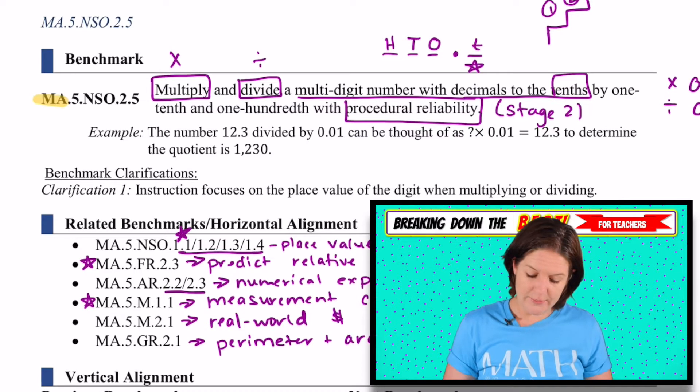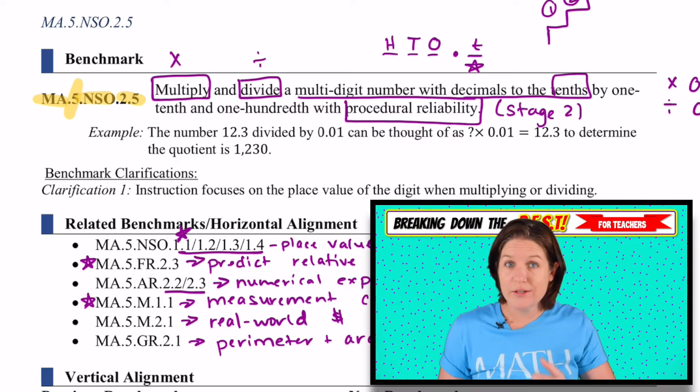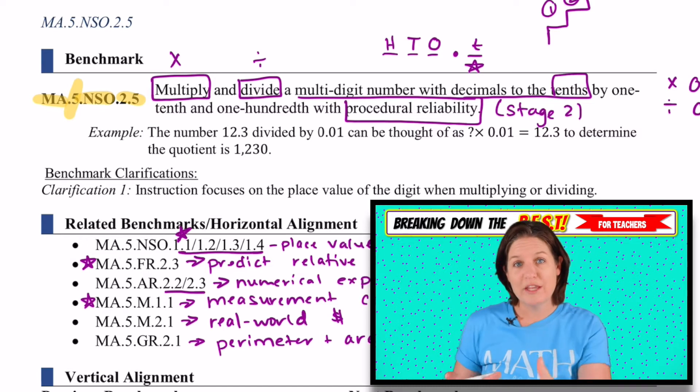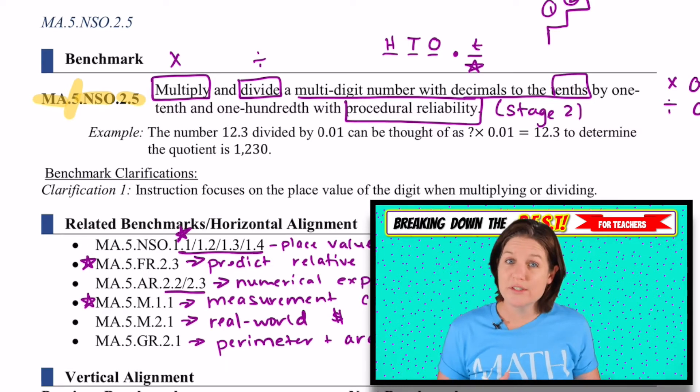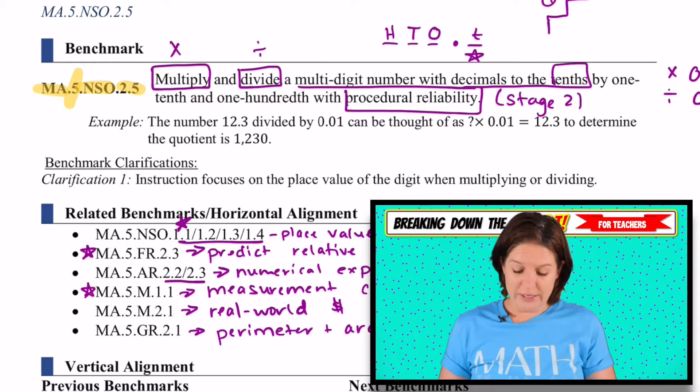The standard is MA.5.NSO.2.5. MA stands for math, 5 stands for fifth grade, NSO - number sense and operations. And then we're on 2.5. By the way, this document that I'm using, I didn't make it. The Florida Department of Education releases it to the public. And I'm just showing you how I take what they provide with clarification for the standards to create resources that are aligned to the standards and taking on the best.